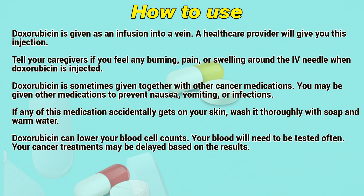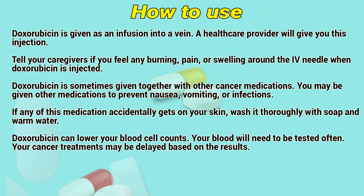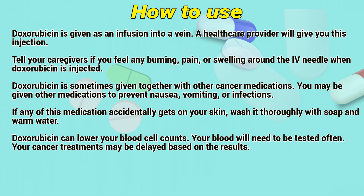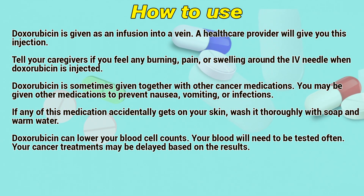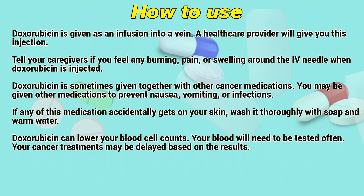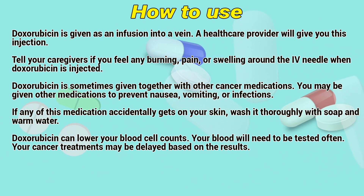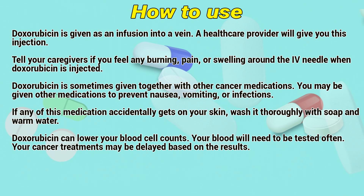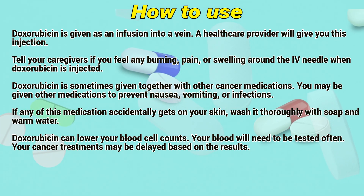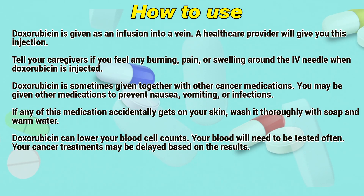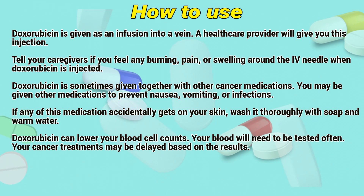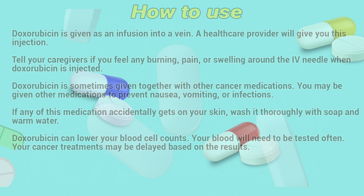How to use: Doxorubicin is given as an infusion into a vein; a healthcare provider will give you this injection. Tell your caregivers if you feel any burning, pain, or swelling around the IV needle when doxorubicin is injected. Doxorubicin is sometimes given together with other kinds of medications. You may be given other medications to prevent nausea, vomiting, or infections. If any of this medication accidentally gets on your skin, wash it thoroughly with soap and water. Doxorubicin can lower blood cell counts, so your blood will need to be tested often. Your cancer treatments may be delayed based on the results.